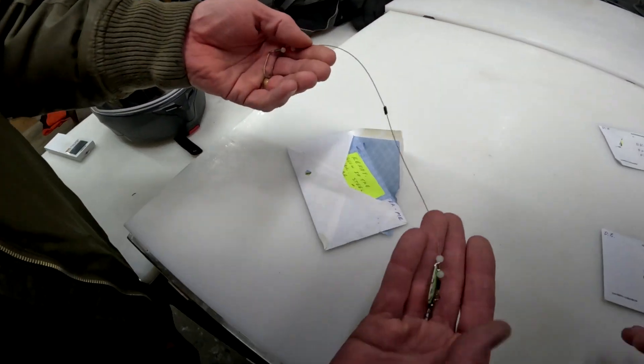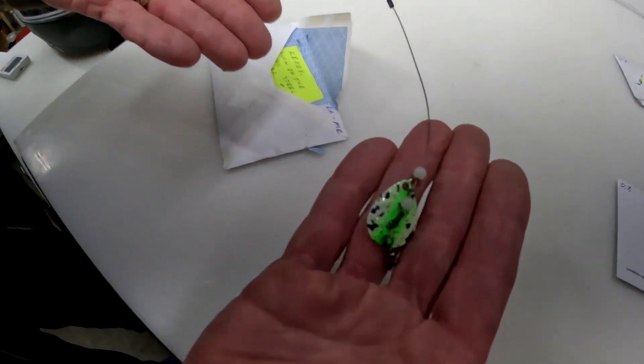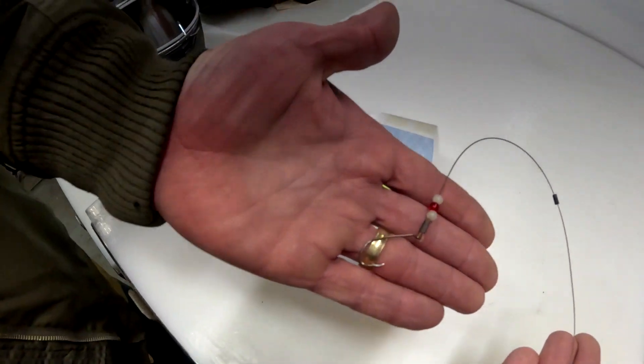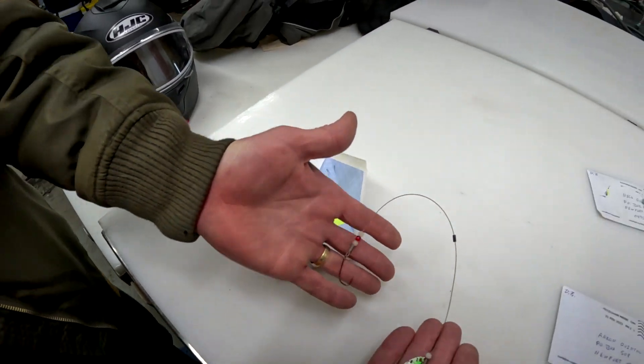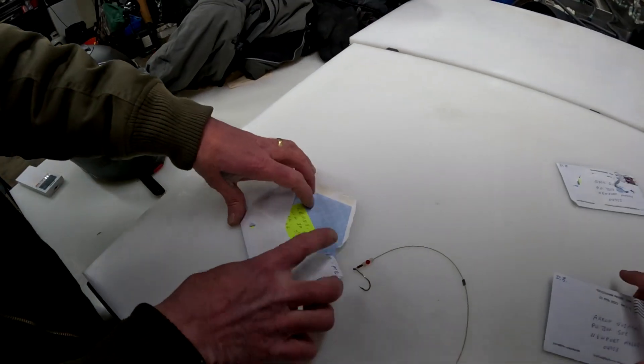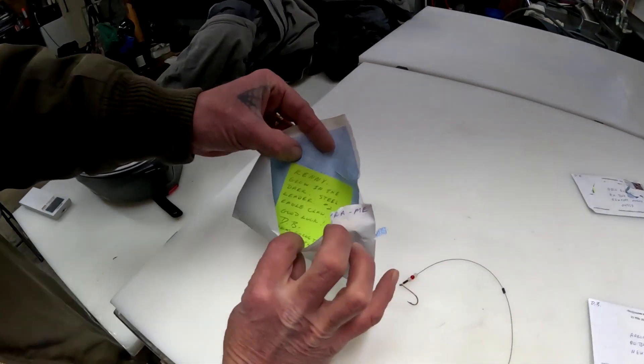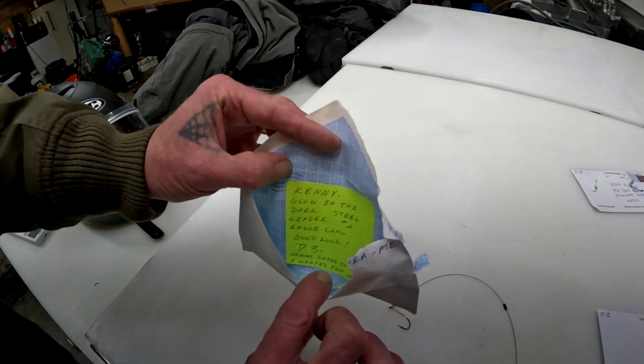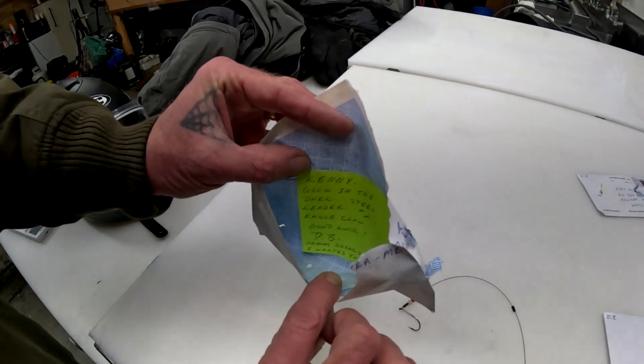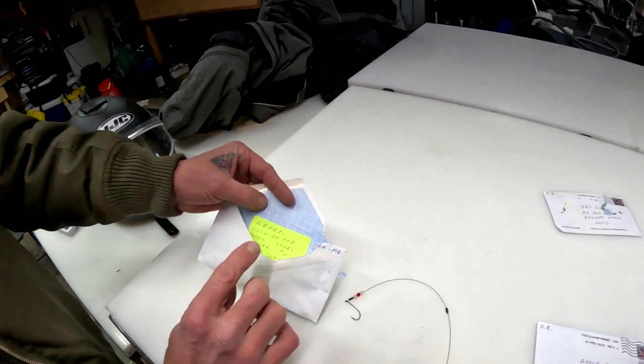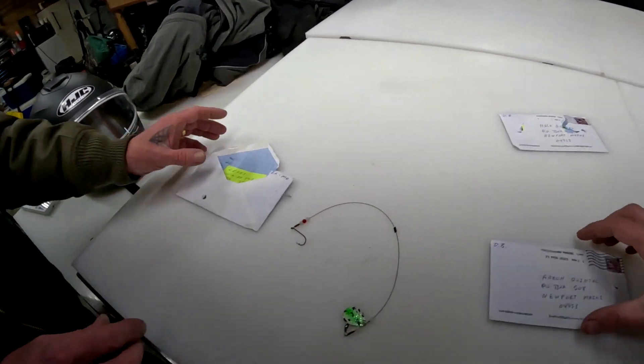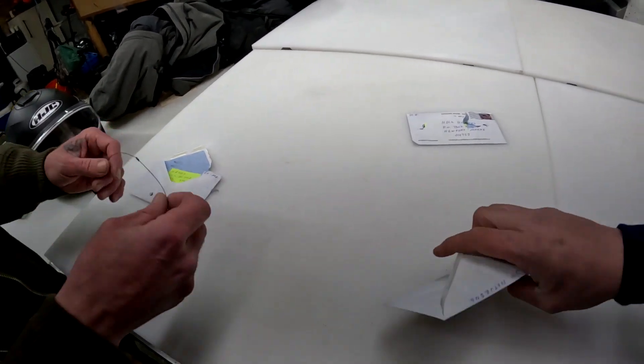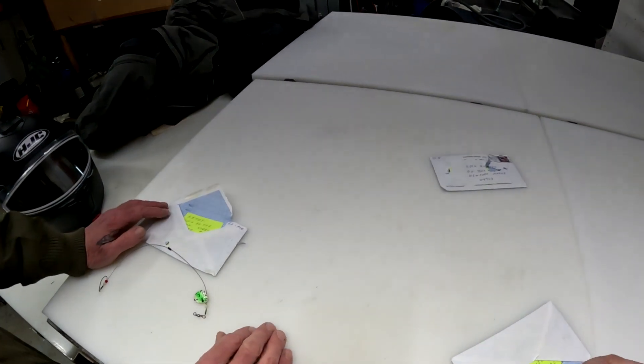We've got a lure in there. Oh, look at that one. Oh, it's a steel leader, that steel leader. Nice hook on it, it's pretty awesome. It says glow in the dark steel leader, number two Eagle Claw, good luck DB. Aaron's going to say I wanted that one.